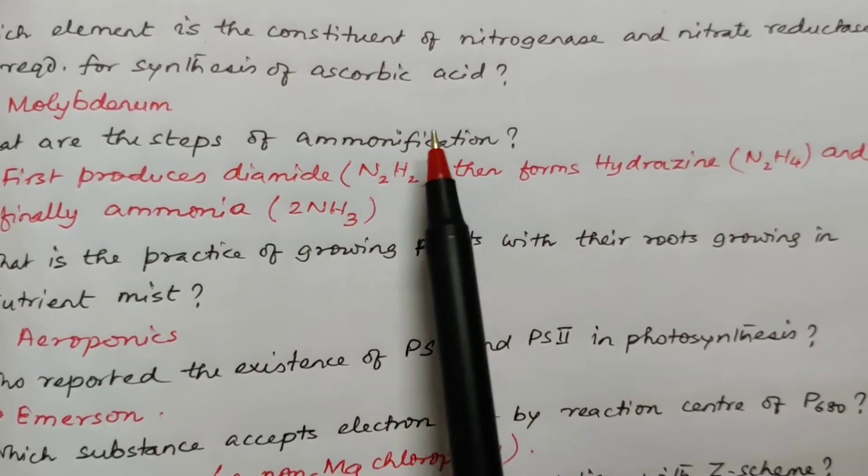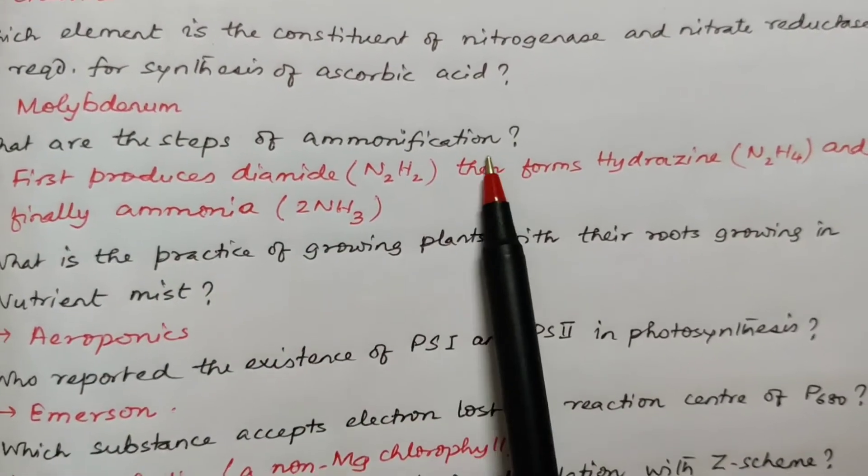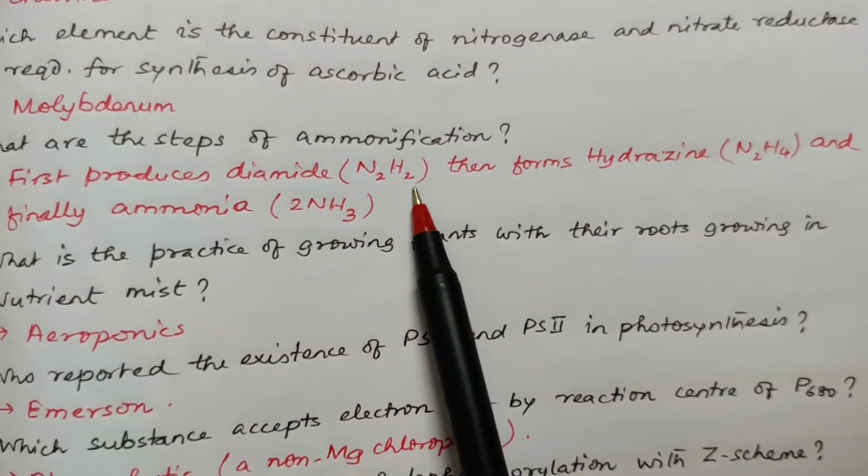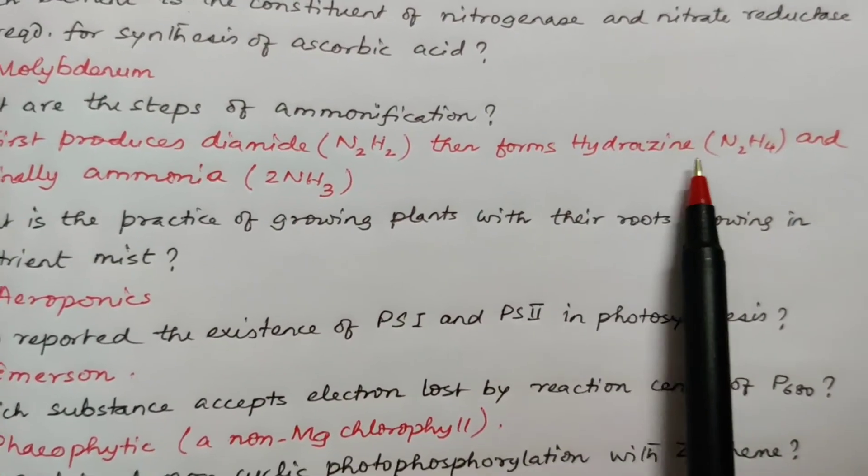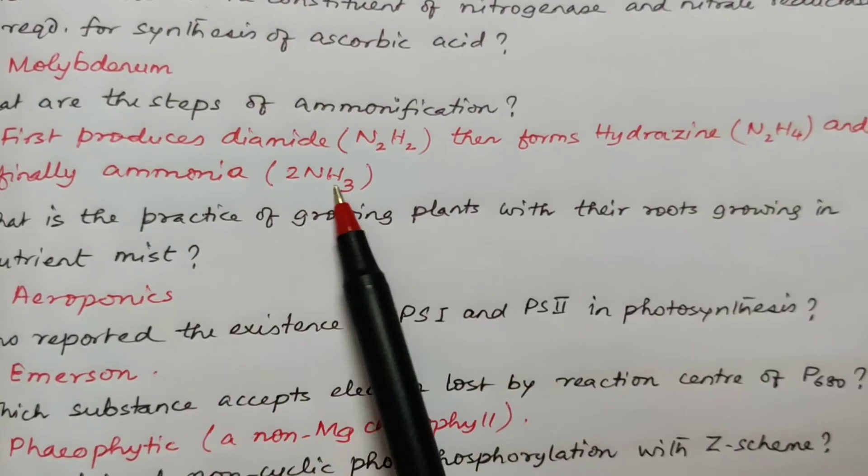What are the steps of ammonification? We will do it step by step. First it produces diamide, then it produces hydrazine and finally ammonia.